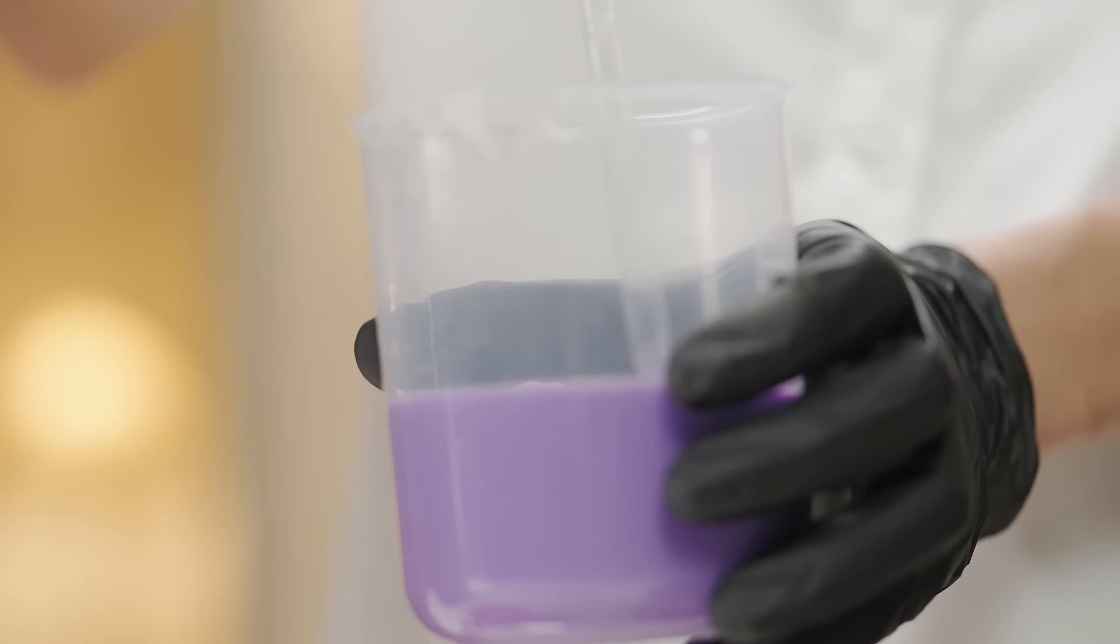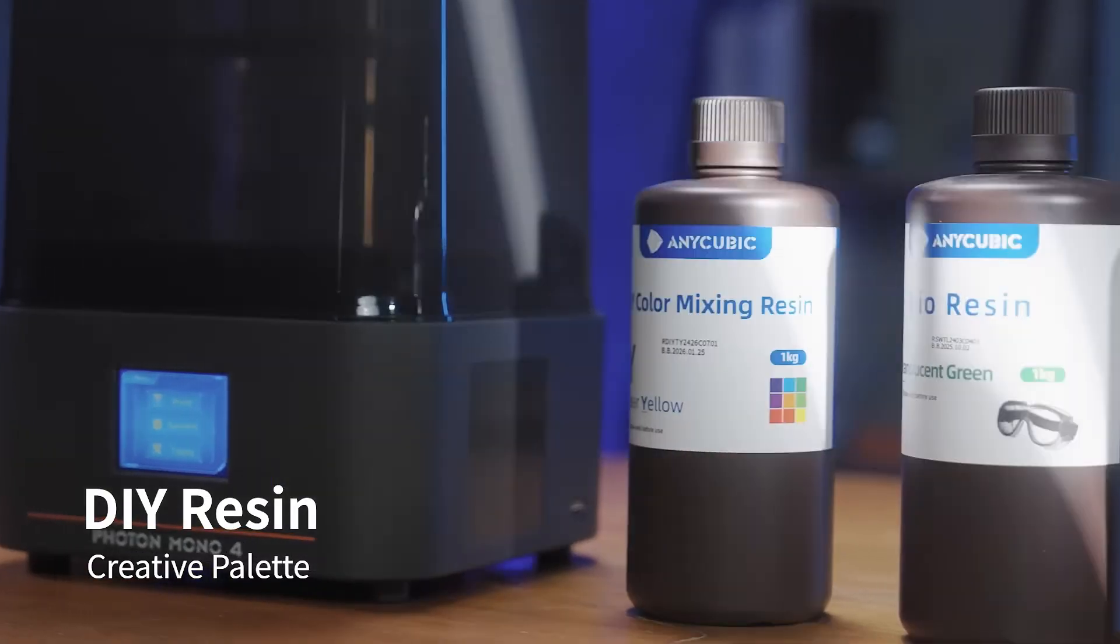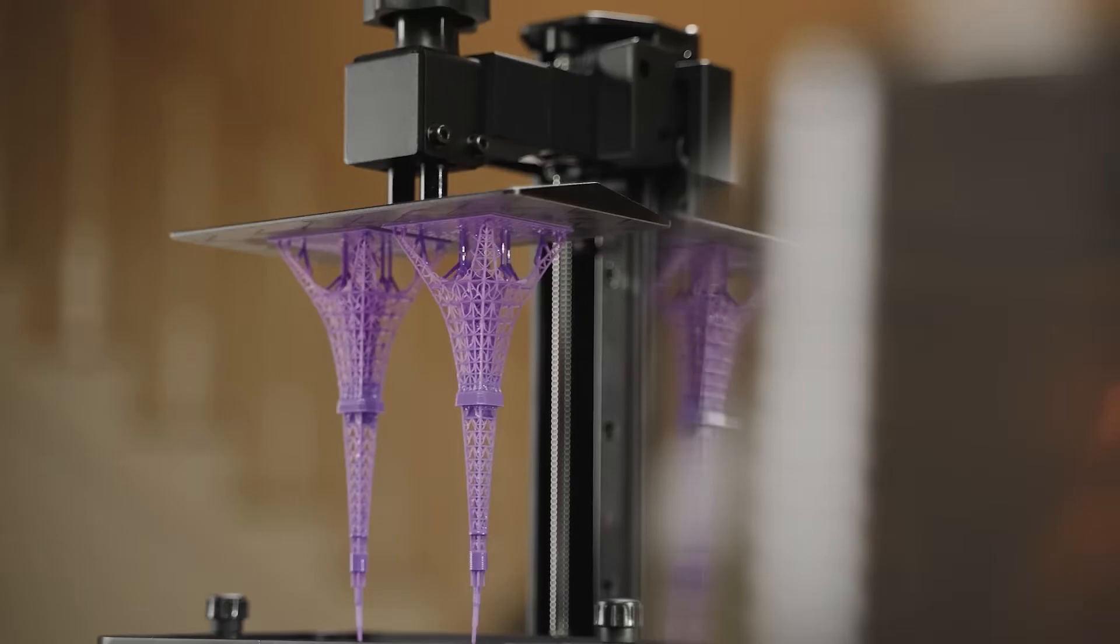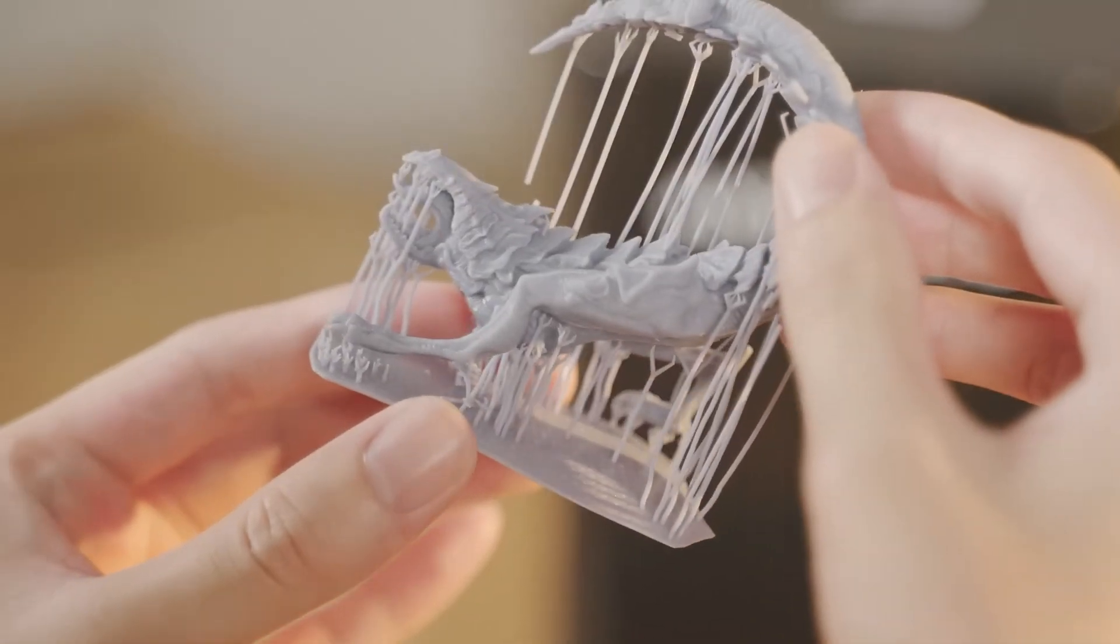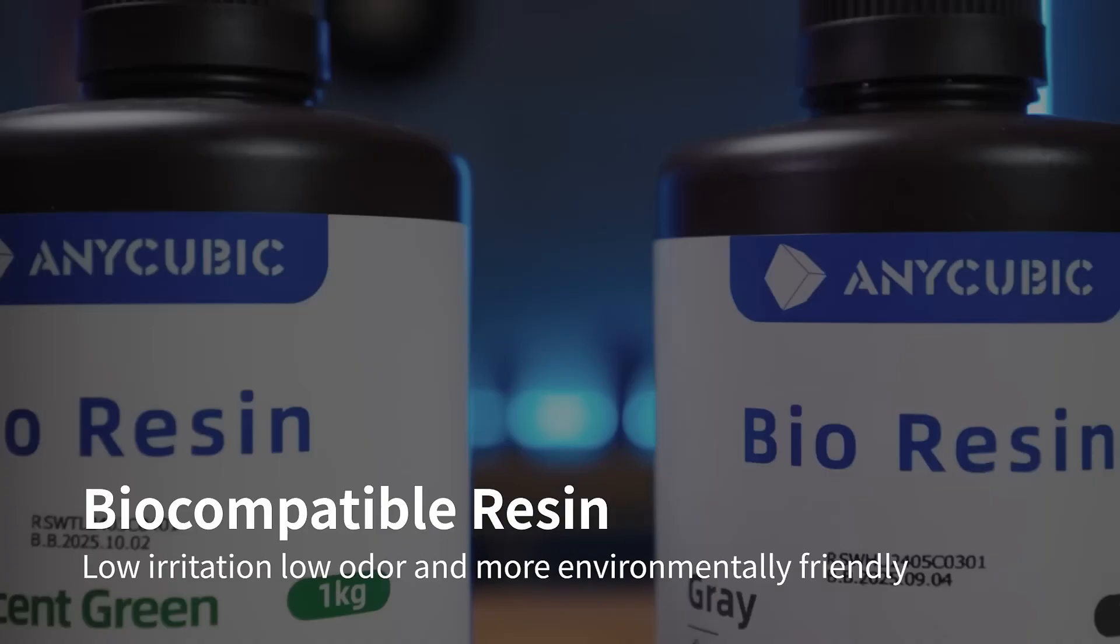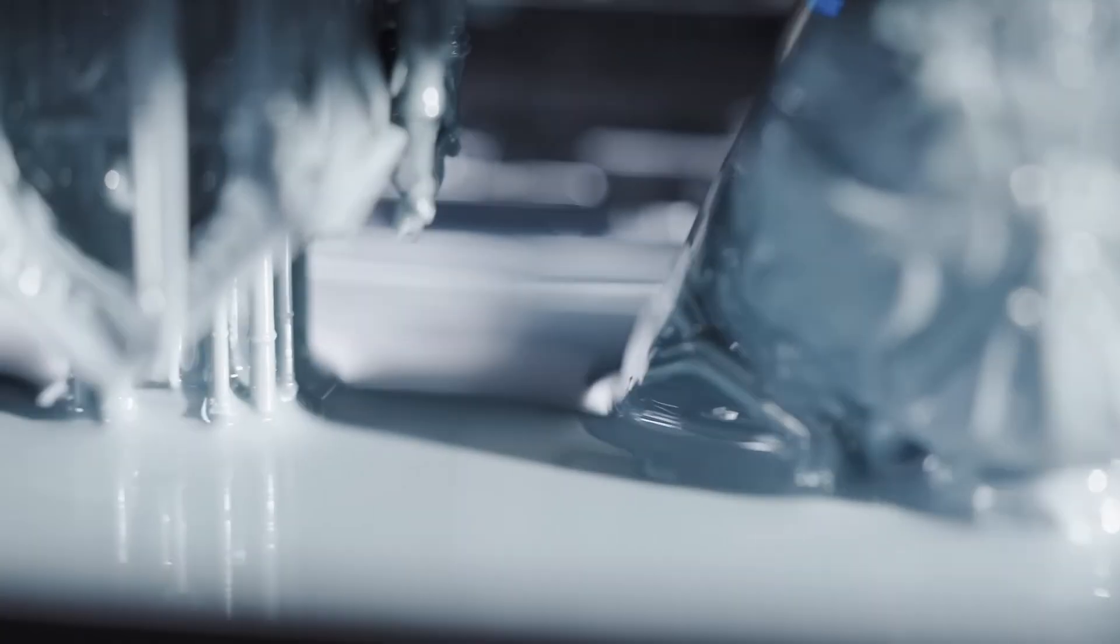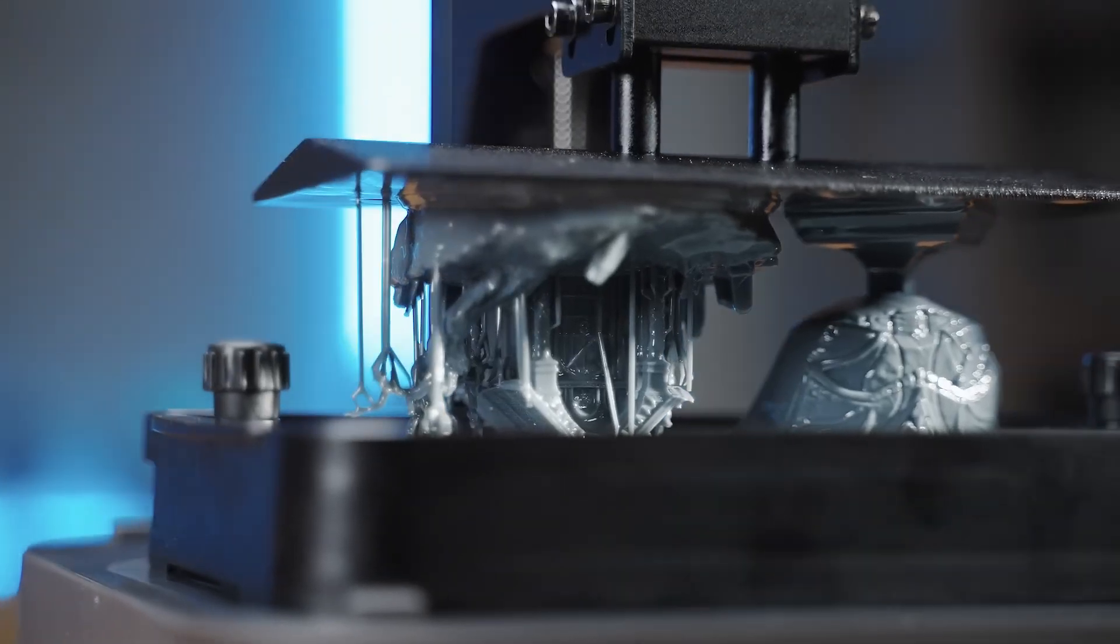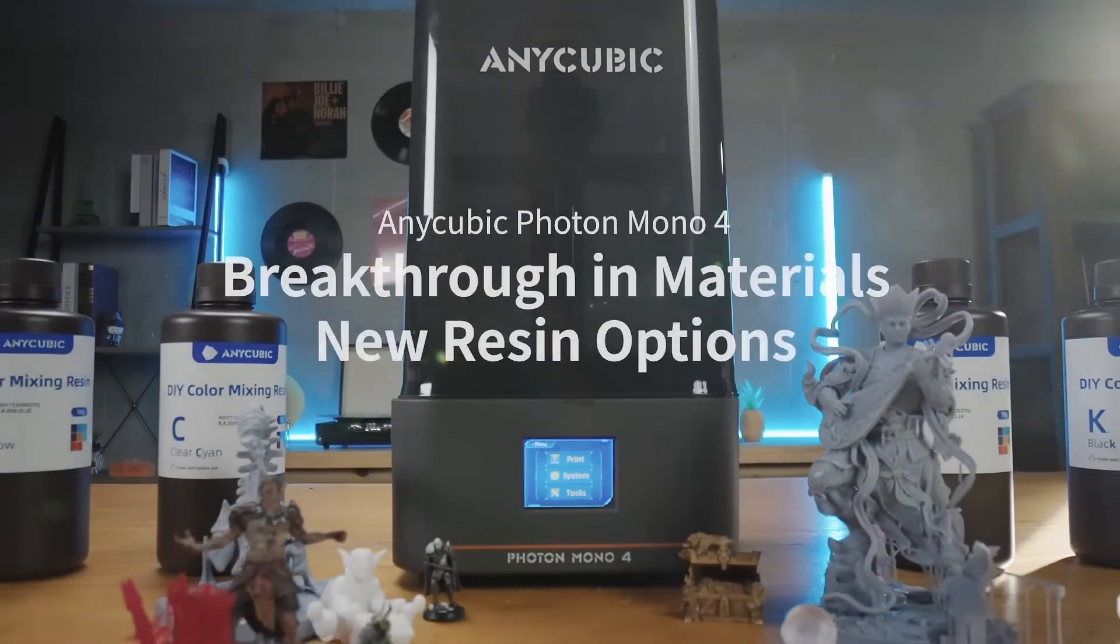This printer can easily accommodate a wide range of projects, from daily tasks to more complex models. The laser-engraved print platform 2.0 enhances adhesion to prevent warping or lifting during prints, ensuring smoother and easier removal. Its four-point leveling system makes it ideal for beginners, and the printer can resume prints after power loss, reducing material and time wastage.